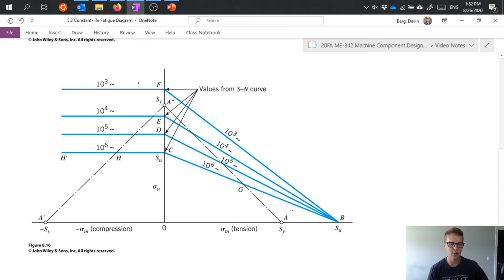Because nothing is going to exceed the ultimate strength. We're not going to exceed that and still have our part survive. So that is important to consider. And then we have a dashed dotted line which has limits at the yield strength on both axes and then connecting those lines.